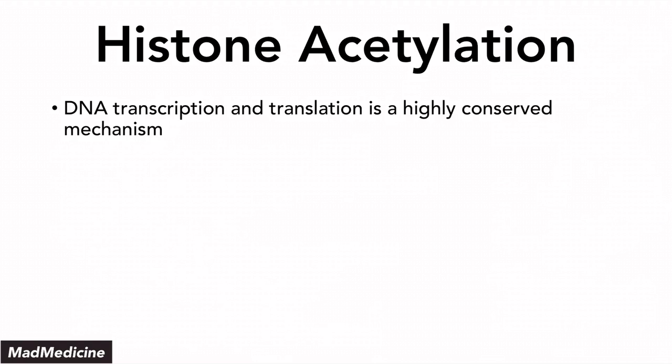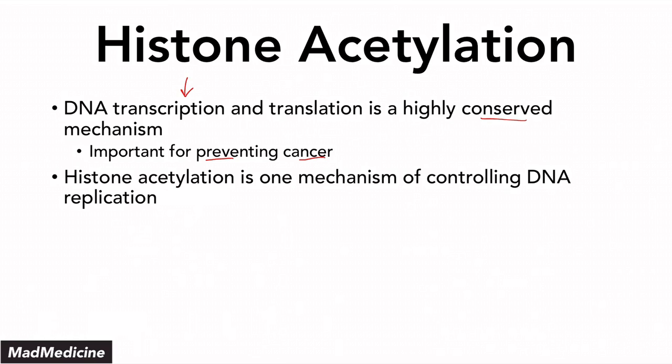Similar to DNA methylation, histone acetylation is one way we can control the transcription of DNA. Transcription is a highly conserved mechanism, mainly because if it were not conserved and we were able to synthesize RNA and proteins unchecked, we would see uncontrolled cell growth and essentially cancer forming. Histone acetylation is just one of the mechanisms used to control DNA transcription and replication, just as DNA methylation is another control mechanism.